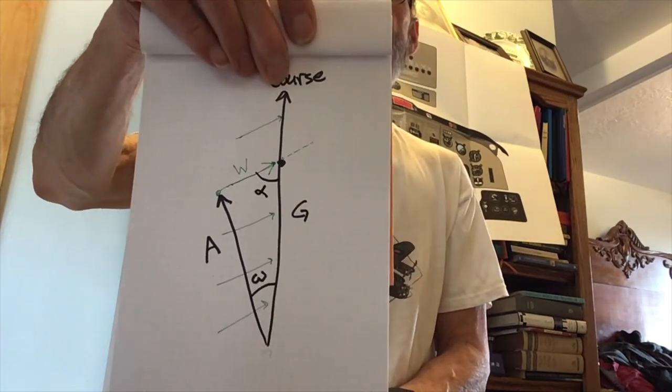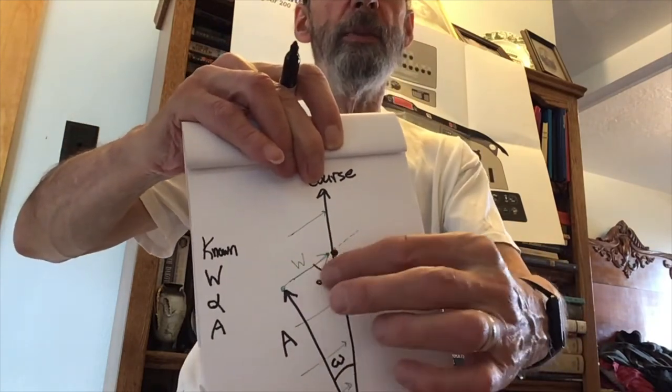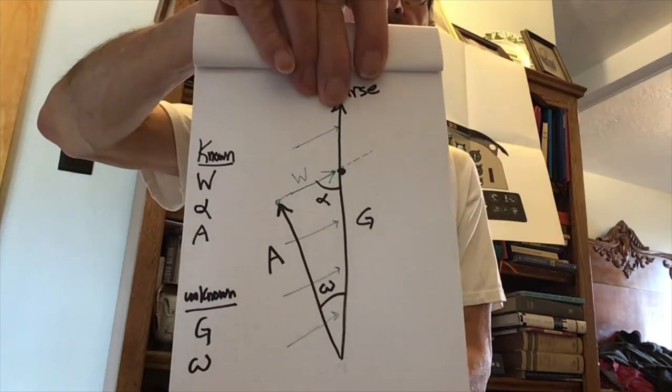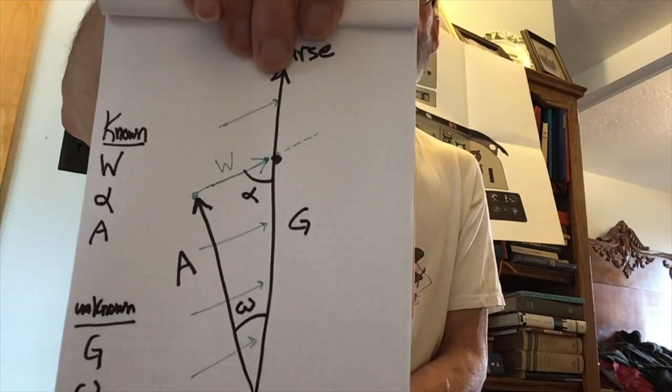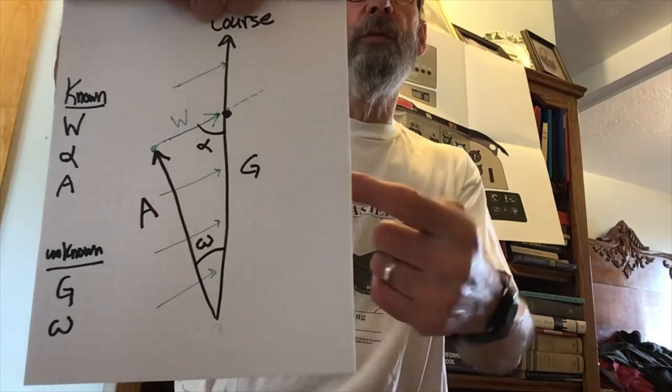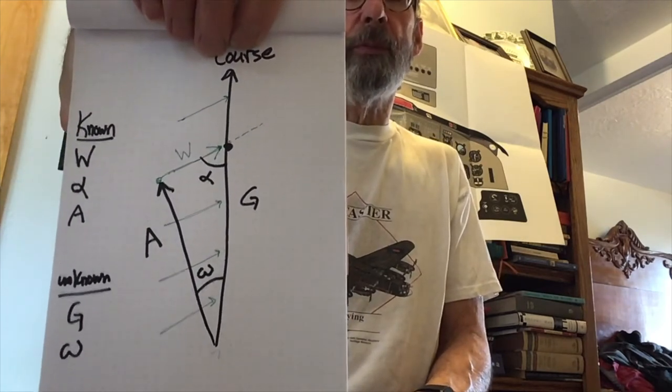Let's line up what we're trying to solve. The knowns are: wind speed W, the wind angle to the course alpha, and the airspeed A. The unknowns are the ground speed G and the wind correction angle omega. This is a natural setup for the law of sines, which we'll do in the next video, and then the law of cosines in the video after that. With good measurements this graphical approach works, but it's interesting to see the analytic solution too.